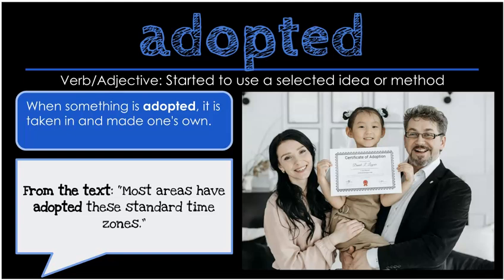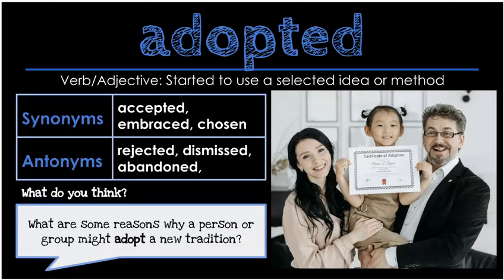Our next word is adopted. Adopted can be a verb or an adjective, meaning to start to use a selected idea or method. When something is adopted, it is taken in and made one's own. We can see here a picture of a family that adopted a little girl — they decided to take her in and make her one of their own. From the text: most areas have adopted the standard time zones. Synonyms for adopted would be accepted, embraced, or chosen. Antonyms would be rejected, dismissed, or abandoned. What do you think? What are some reasons why a person or group might adopt a new tradition?